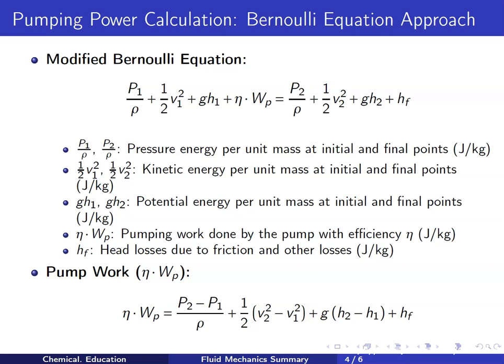In this modified equation: p1/ρ and p2/ρ are pressure energy per unit mass at initial and final points (J/kg); ½v1² and ½v2² are kinetic energy per unit mass at initial and final points (J/kg); g·h1 and g·h2 are potential energy per unit mass (J/kg); η·wp is the pumping work done by the pump with efficiency η (J/kg); and hf is losses due to friction and other losses (J/kg).